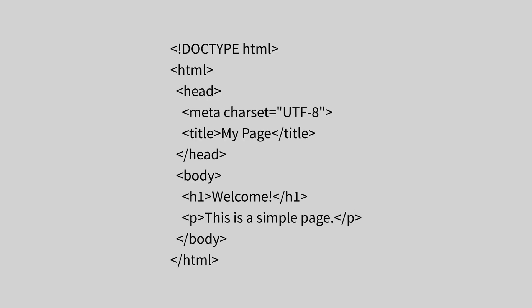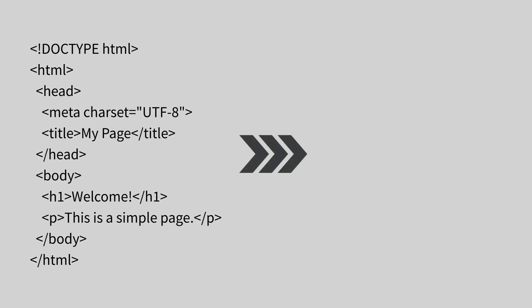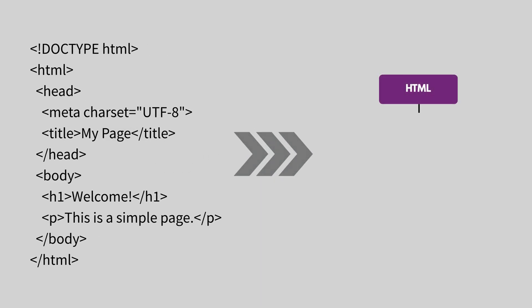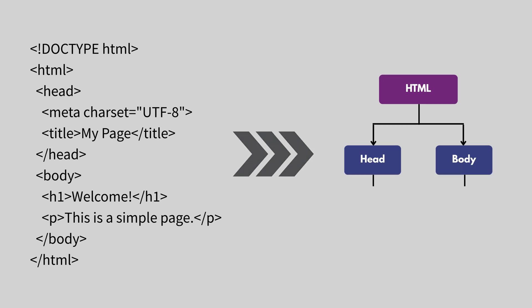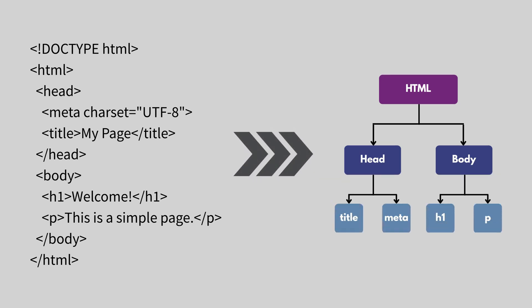It takes your HTML and turns it into a tree of objects. So every div, every heading or button becomes a node in this tree. So what is the point of these elements being nodes in the tree? It's because JavaScript can then access and change these elements directly.